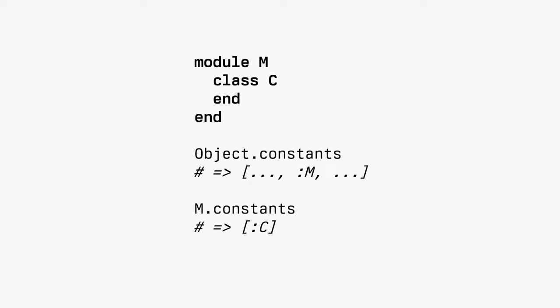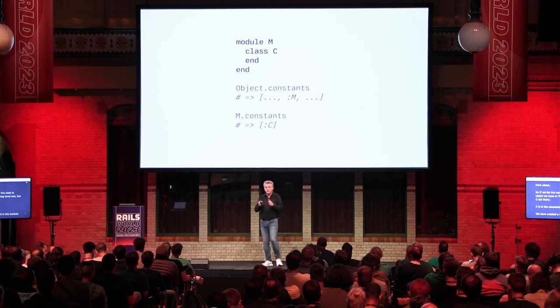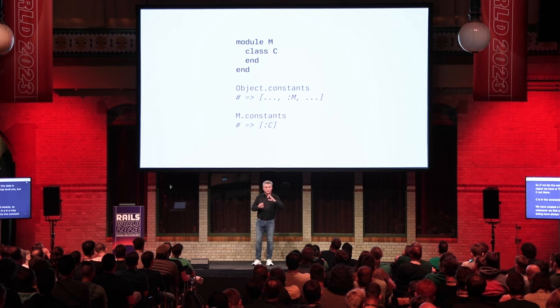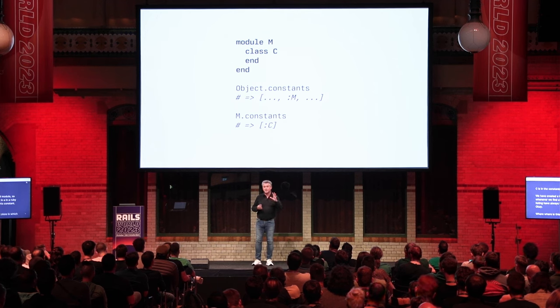Now let's introduce nesting. We have a top-level module M and nested inside we have class C. This is the emulation of namespaces — that class C is in the M namespace. If we list the constants in Object we have M, but C is not there; C is in the constants of M. Whenever we find a constant in a Ruby listing, we must think: in which class or module object is this constant stored?